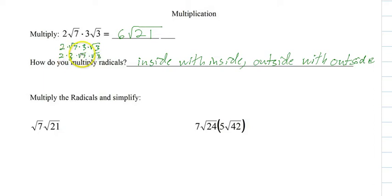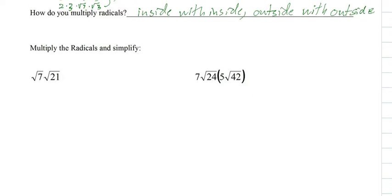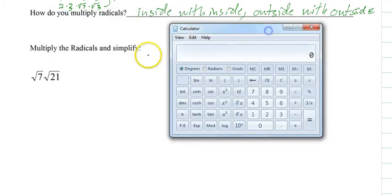And since these are both being square rooted, then we can write 2 times 3 and then square root of 7 times 3. So you notice the insides are together and they multiply inside with inside - 7 times 21 is 147.